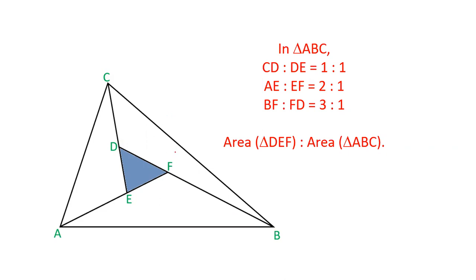In this video there is a triangle ABC and there are three lines drawn from A, B, and C. The lines are AF, BD, and CE which meet at D, E, and F. The ratio of the sides intersected by D, E, and F are given: CD:DE = 1:1, AE:EF = 2:1, and BF:FD = 3:1. We have to find the area of DEF and area of ABC.